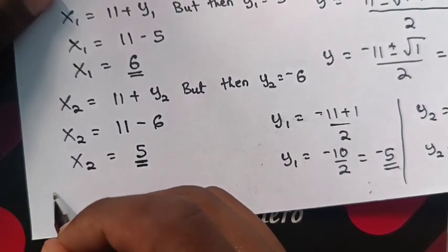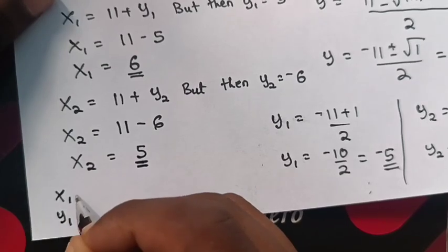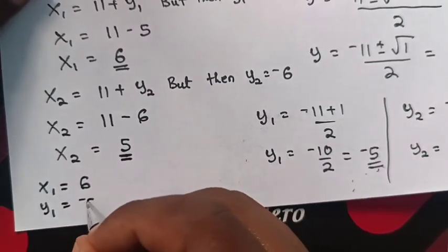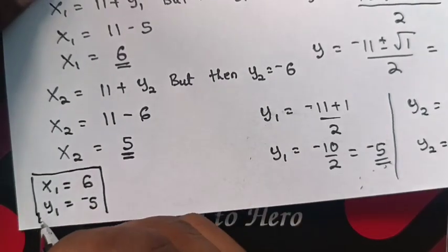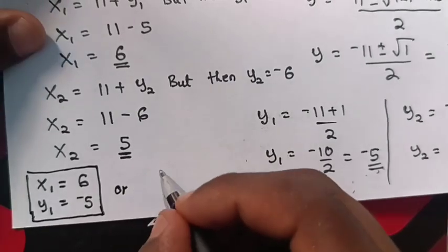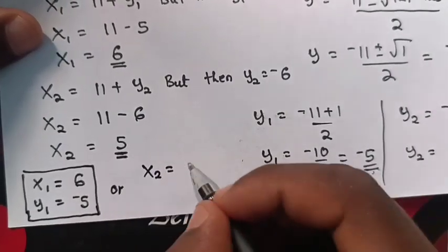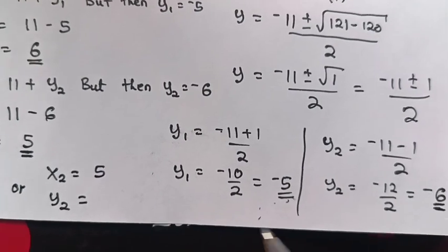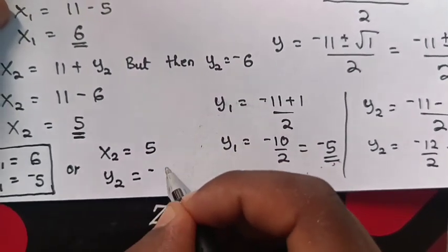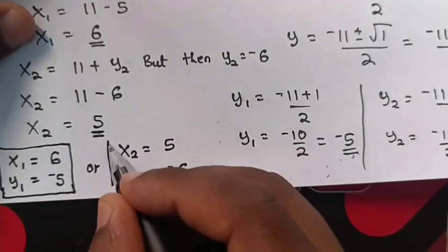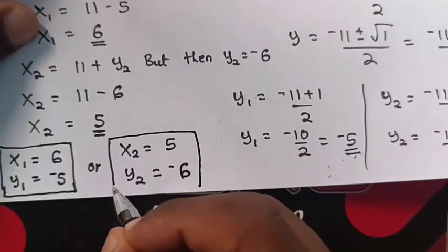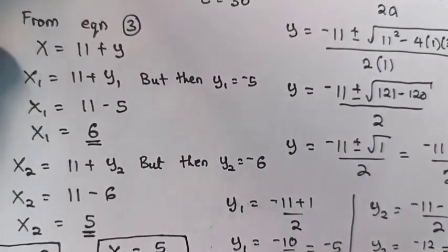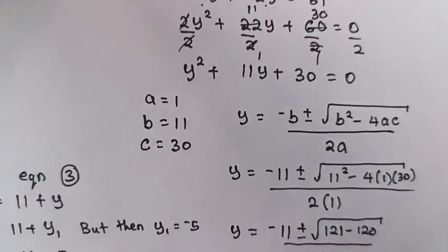Therefore, the values of x₁ and y₁ are x₁ equals 6 and y₁ equals negative 5. Or, x₂ equals 5 and y₂ equals negative 6. These are the answers for the values of x and y in our problem. Don't forget to subscribe to my channel, and see you in the next video. Bye bye.